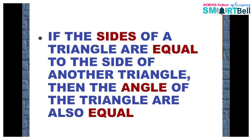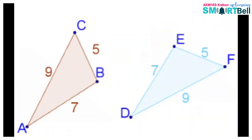That is, if the sides of a triangle are equal to the sides of another triangle, then the angles of the triangle are also equal. Look at this triangle. Here, the sides are equal, so the angles must also be equal. That is, each angle of triangle ABC is equal to some angle of triangle DEF.